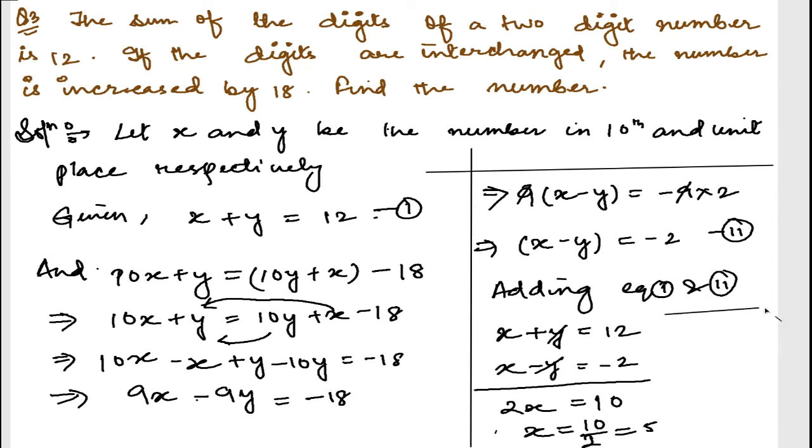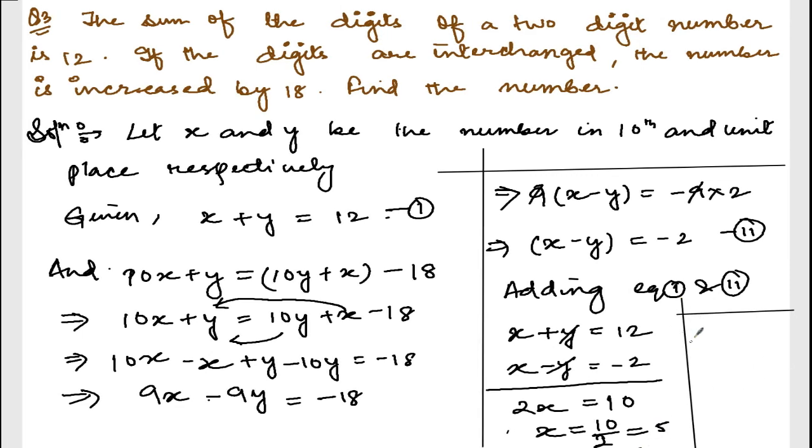Now, if I put x equals 5 in equation number 1, it will be 5 plus y equals 12. So y will be equal to 12. 5 will go that side, it will become minus 5. 12 minus 5 is 7. So the two numbers are 5 and 7 respectively.